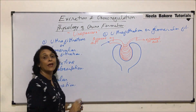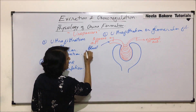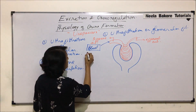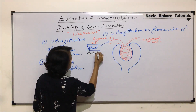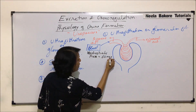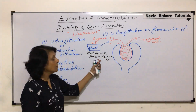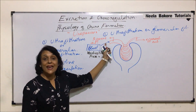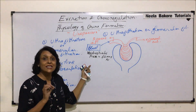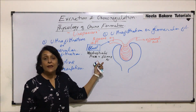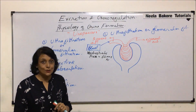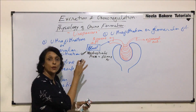The blood entering into the afferent arteriole has a hydrostatic pressure equal to 60 millimetres of mercury. With this pressure the blood enters into the capillaries, but there is resistance also. This is the pressure with which blood is coming in.